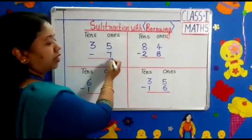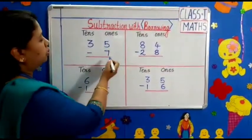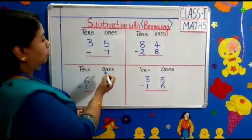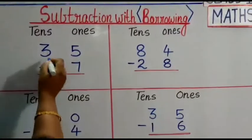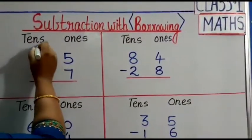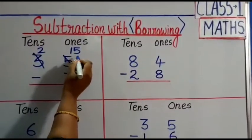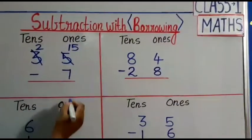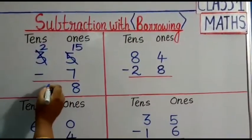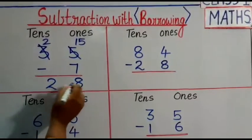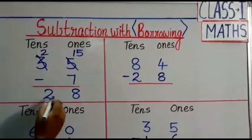5 ones minus 7 ones. 5 is a smaller number, 7 is a bigger number. So we will borrow 1 tenth from 3 tenths. 3 becomes 2, 5 becomes 15. 15 minus 7 is 8. Now 2 tenths comes down. 28. So 35 minus 7 is 28.